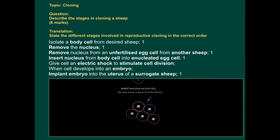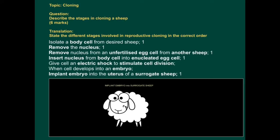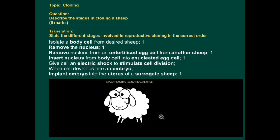And then you just need to put that embryo inside a surrogate sheep. And about six months later, another sheep pops out, the clone in fact. So you then implant the embryo into the uterus of a surrogate sheep.